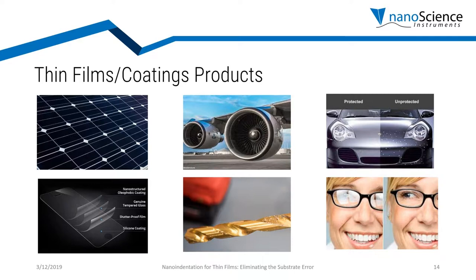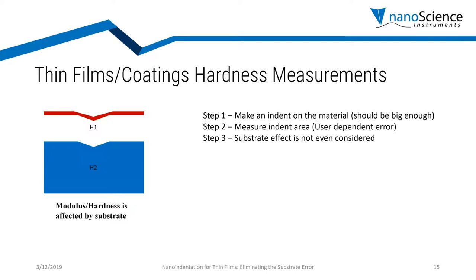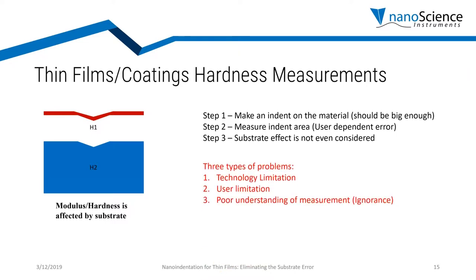When we manufacture thin films, we have to make sure what we have manufactured is exactly what we needed. We do some experiments to measure properties such as hardness — we make an indent on the material and measure the indent area to calculate hardness. In this process, we are unconsciously introducing three kinds of errors. The first error is technological: with conventional micro hardness testers, you end up making a really big indent that deforms much more volume than you wanted. We can eliminate that limitation with nano indentation.